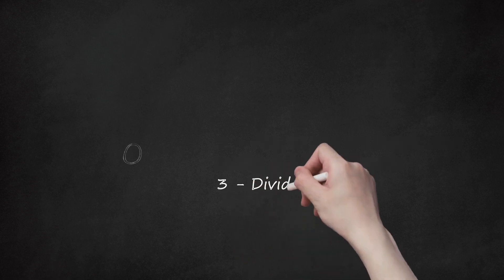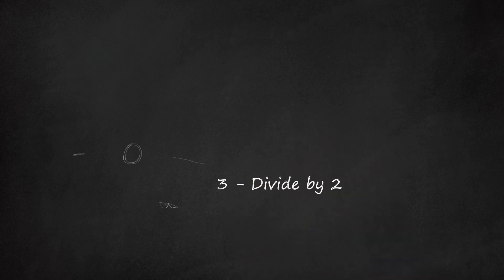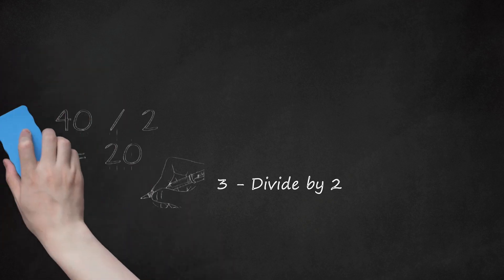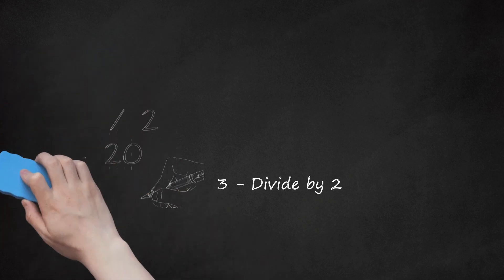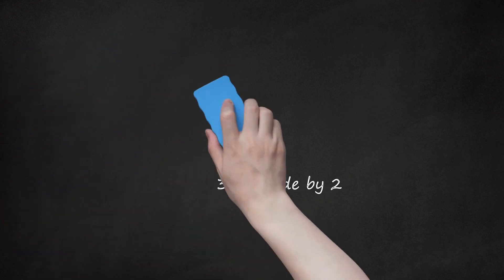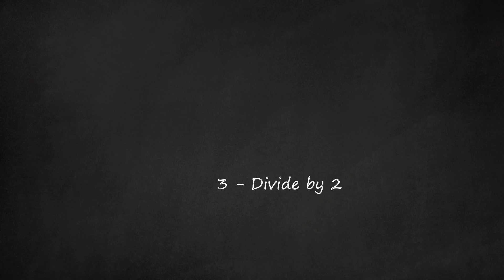Step 3: Divide by 2. You are dividing the numerator found in step 2. This gives you the area of the sector. For example, 40/2 equals 20. Since you are finding the area, your answer will be in square centimeters.